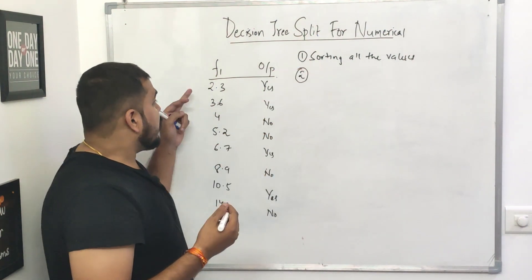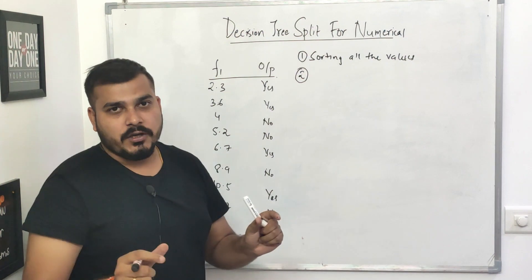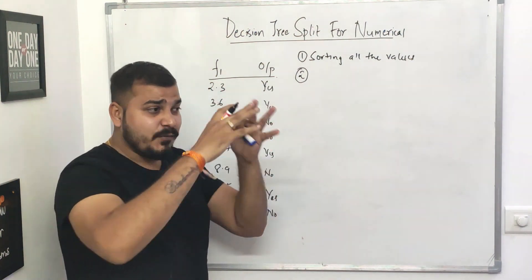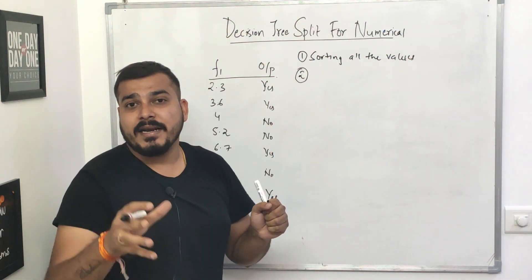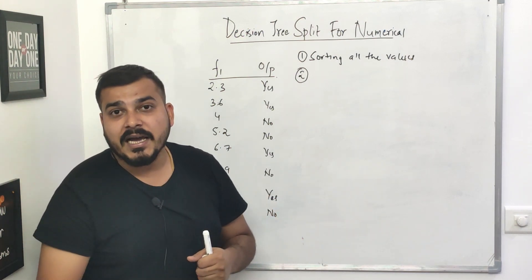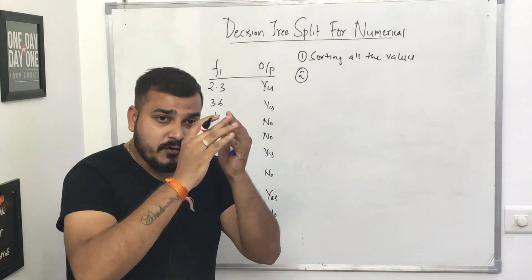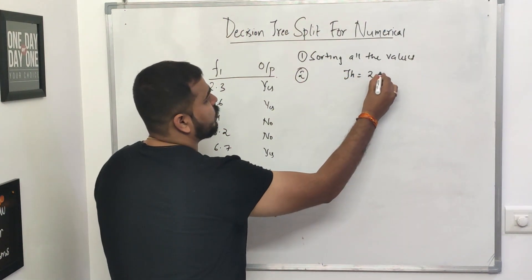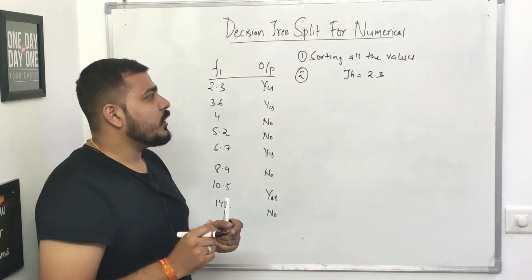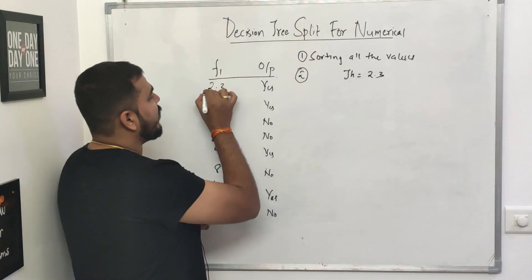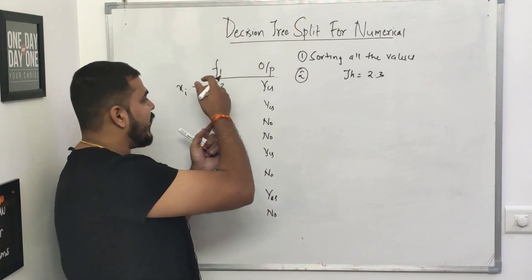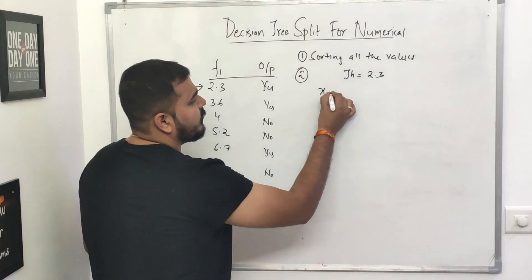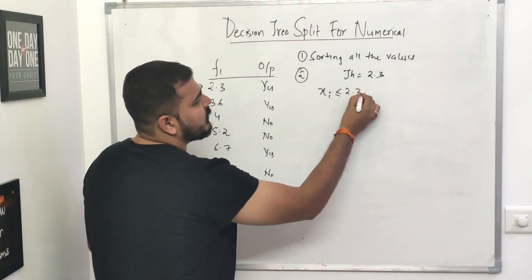The second step is that the algorithm will consider threshold values. For the first iteration, the decision tree with numerical variables will create multiple trees and compare which has better entropy along with information gain. Whichever has the highest information gain will be selected. First, it takes a threshold value — suppose I define my threshold as 2.3 — then it checks for each record X_i whether X_i is less than or equal to 2.3.